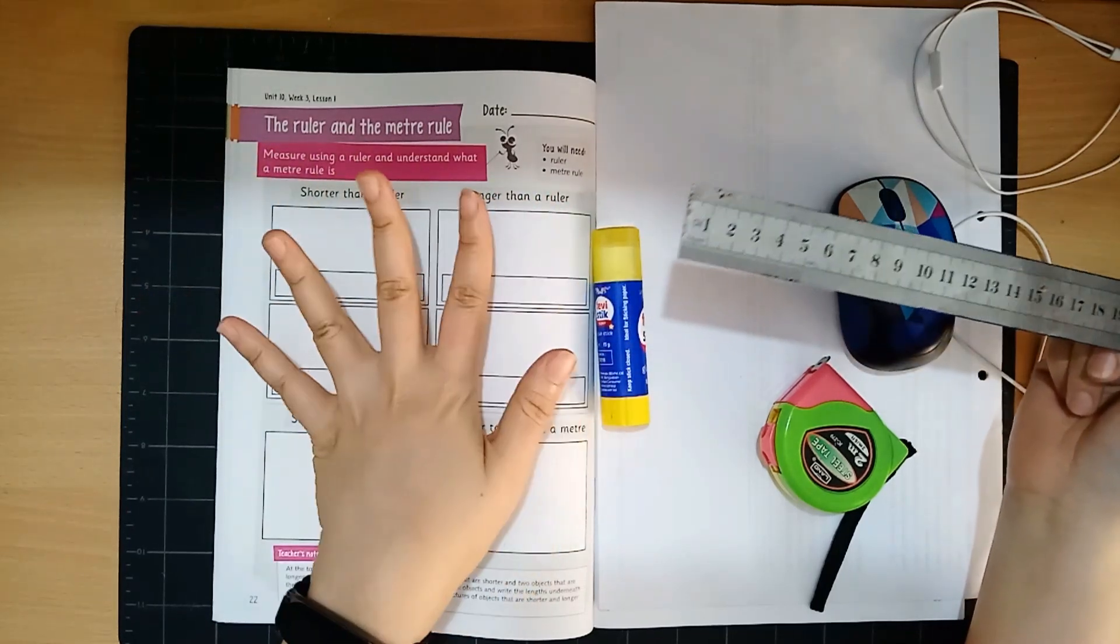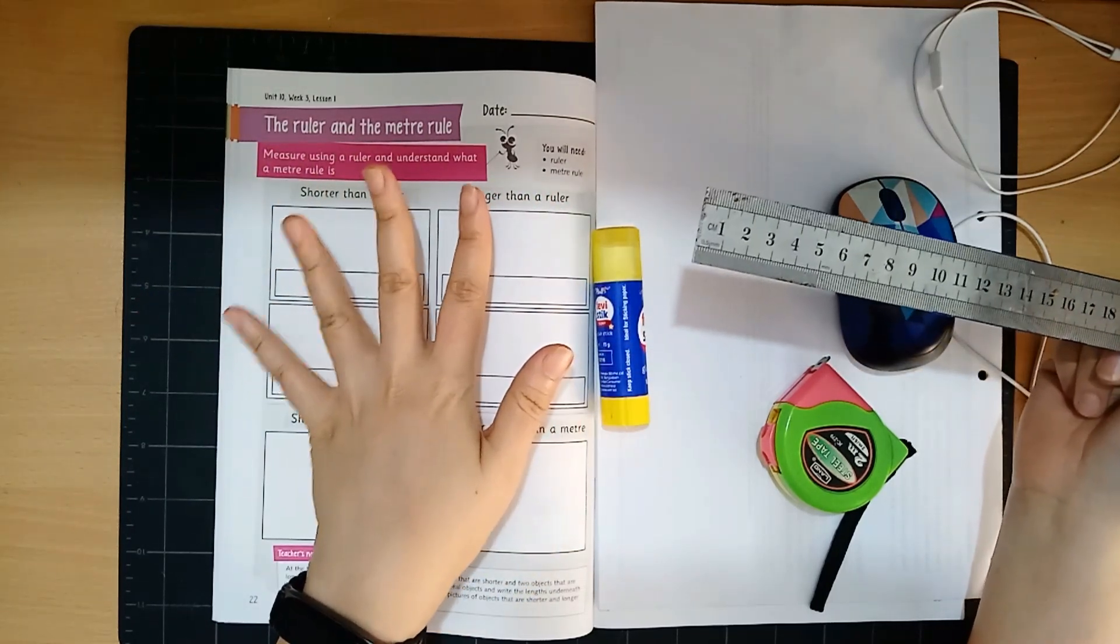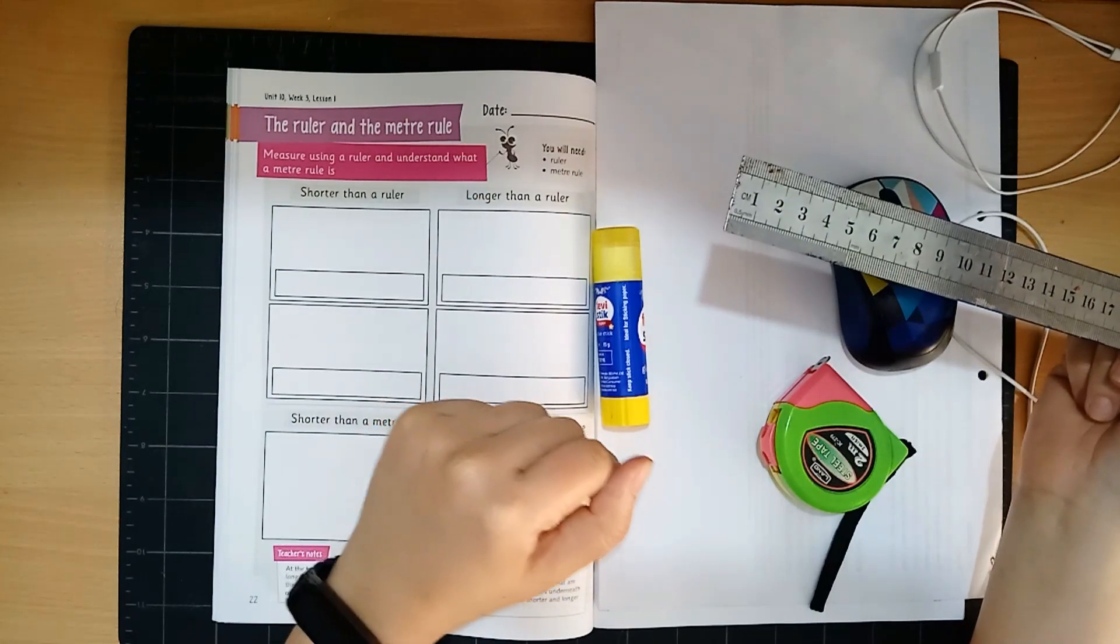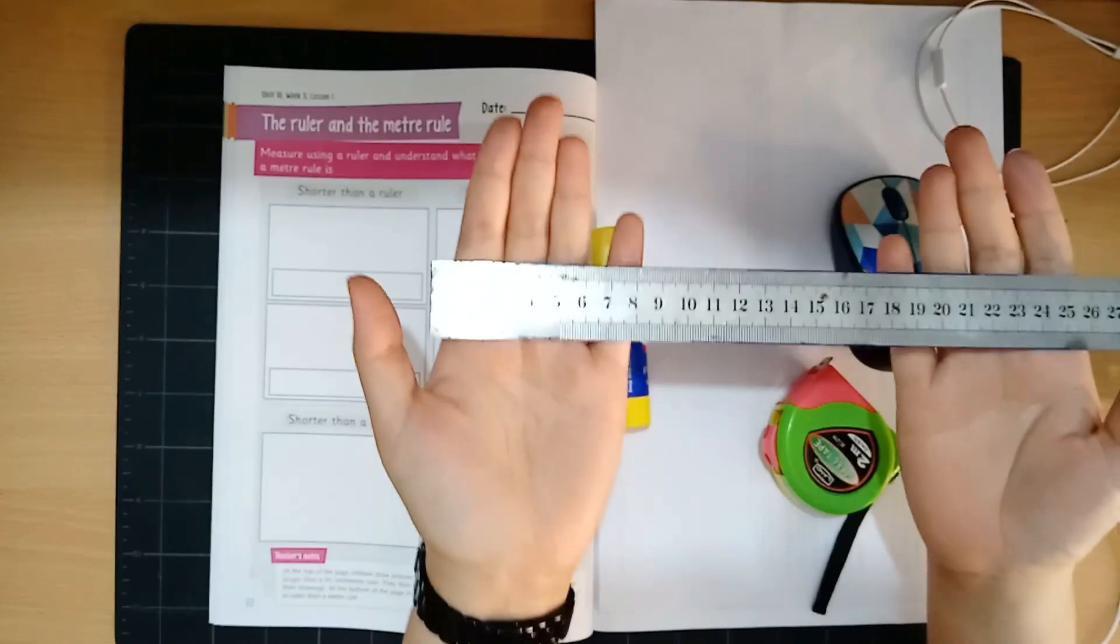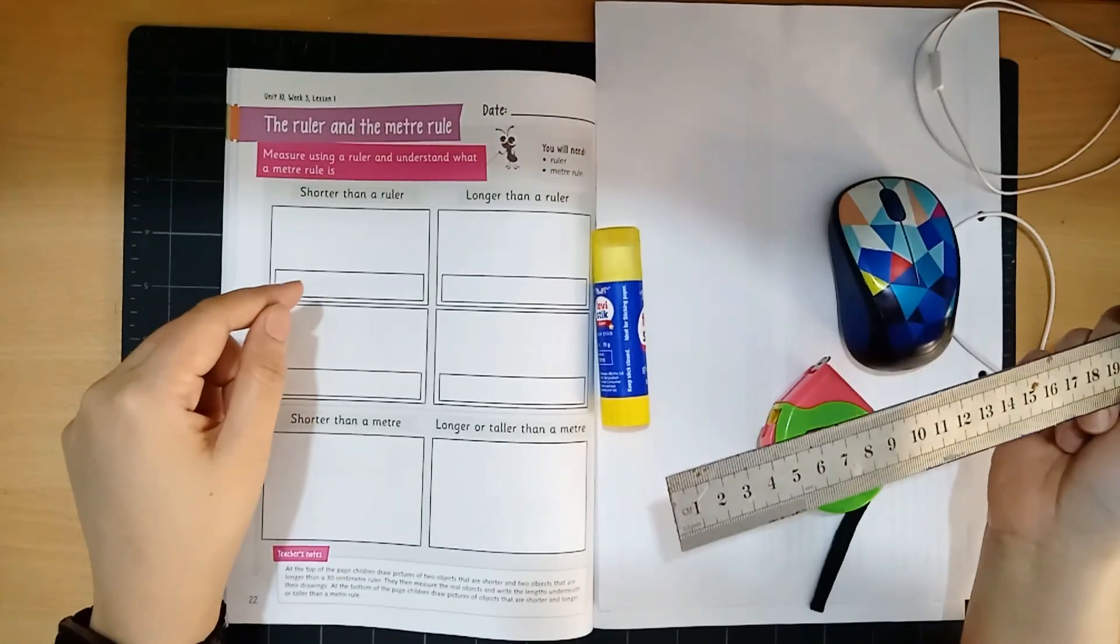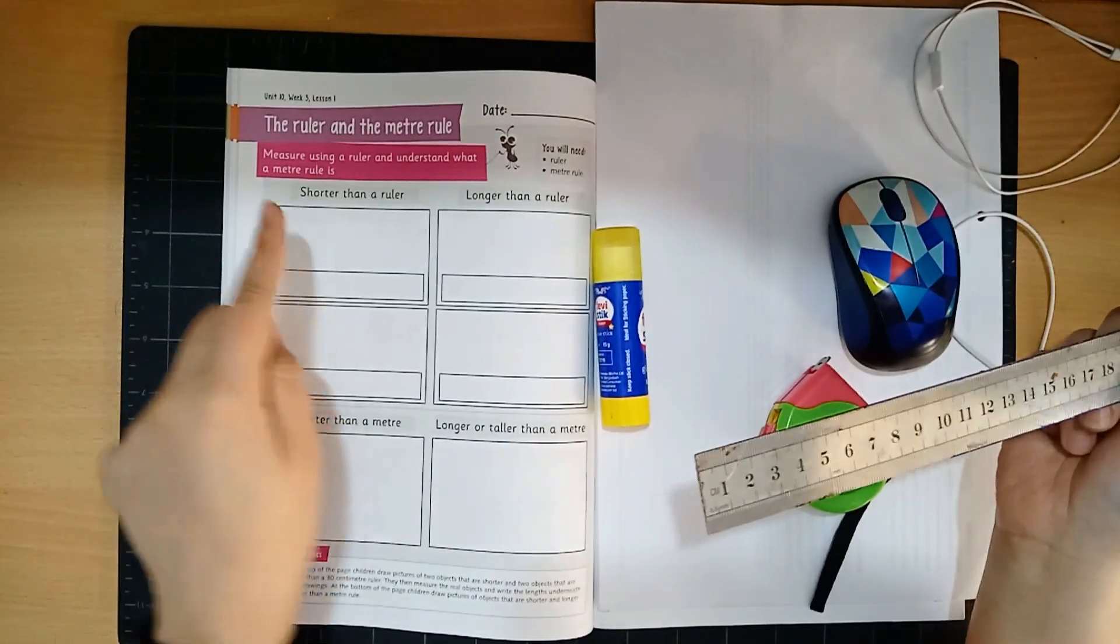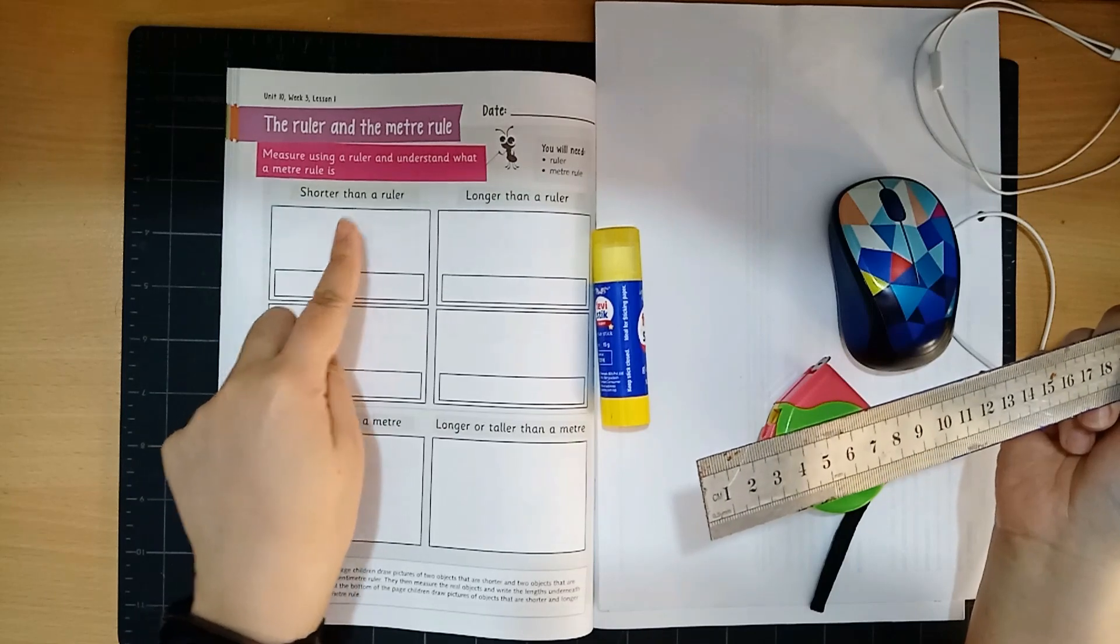So in this activity you're going to measure things that you can find around your house and the first part is actually just using a ruler. Okay so look in your house for things that are shorter than a ruler.